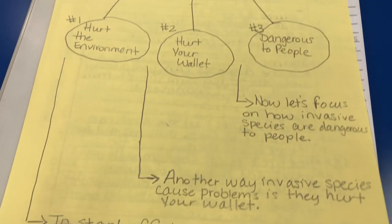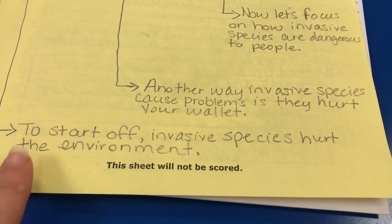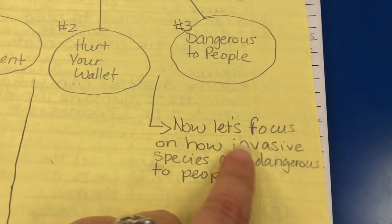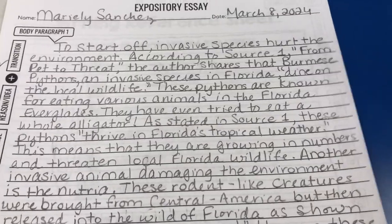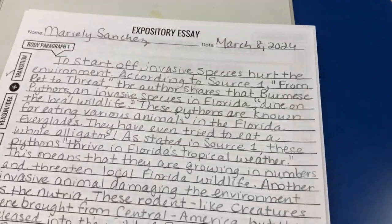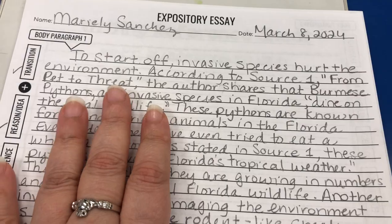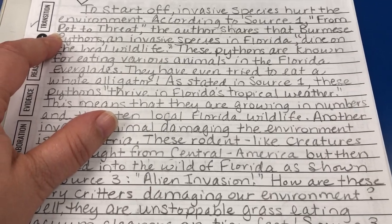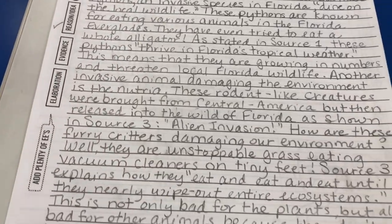I had students help me come up with topic sentences for each body paragraph: 'Invasive species hurt the environment,' 'Another way invasive species cause problems is they hurt your wallet,' and 'Now let's focus on how invasive species are dangerous to people.' I gave them a body paragraph paper — paragraph one on the front, paragraph two on the back — and did think-alouds to show how I develop the writing, using examples from source one and source three with elaboration.